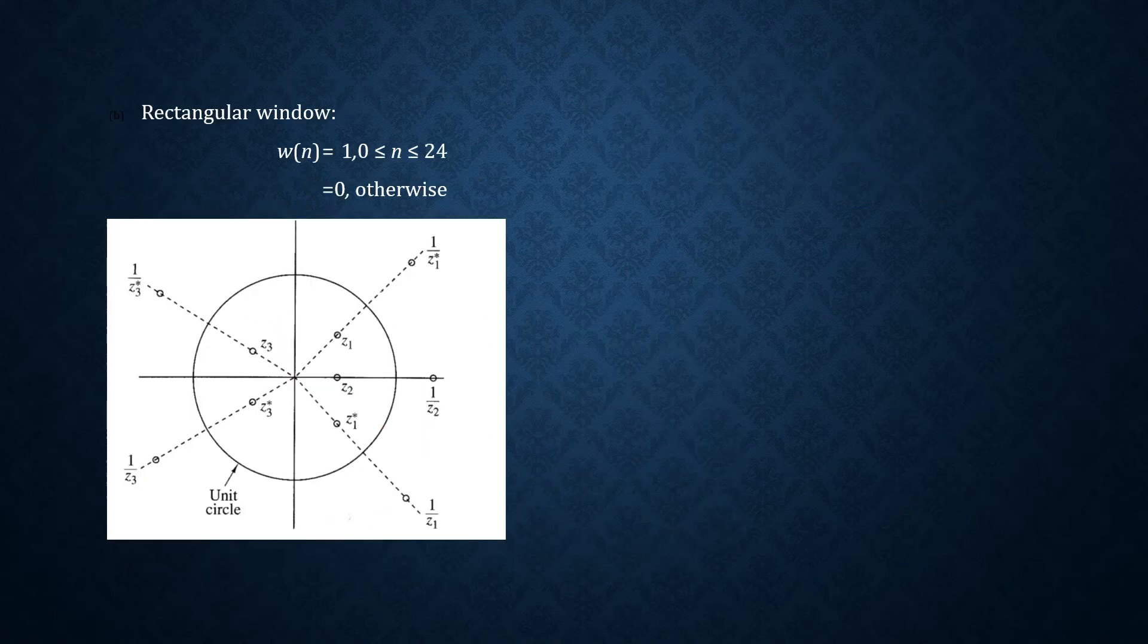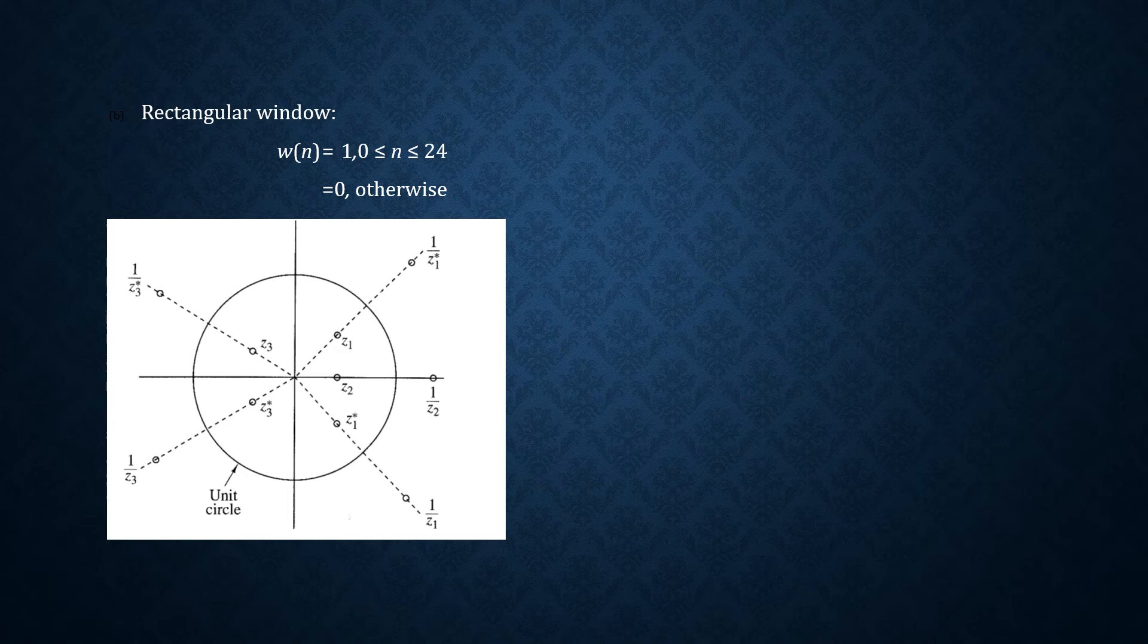For rectangular window, w of n equal to 1 for n lies between 0 to 24 and 0 otherwise.